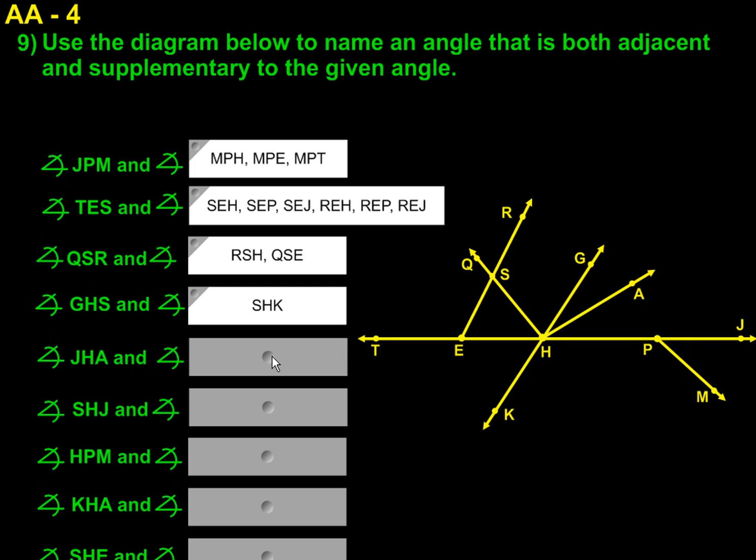Then we have JHA. And we could do AHE, because this and this would make the straight line. Or we could do AHT, which also enables the straight line, 180 degree line.